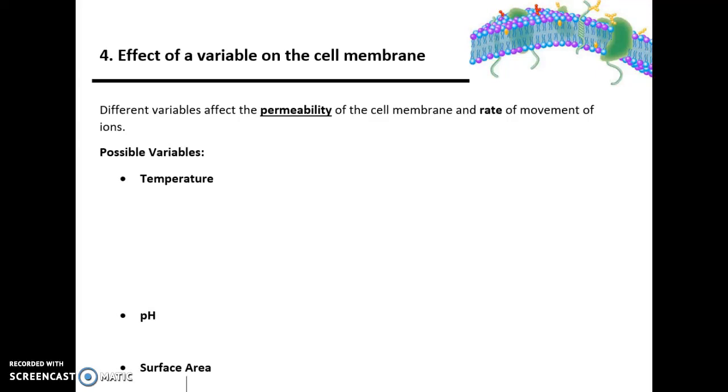Hello and welcome to TeachingBio. Today we're going to look at the fourth required practical for AQA A-level biology, the effect of a variable on the cell membrane. Different variables affect the permeability of the cell membrane and therefore influence the rate of movement of ions and molecules in or out of the membrane.